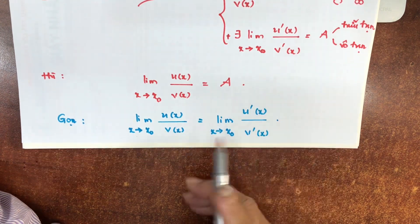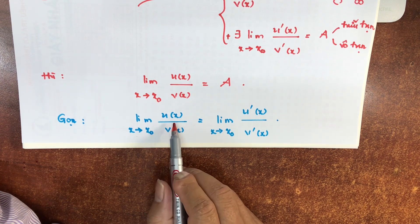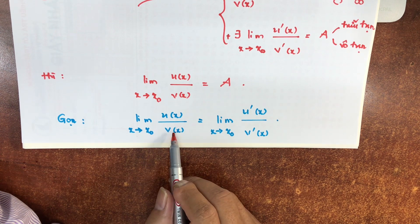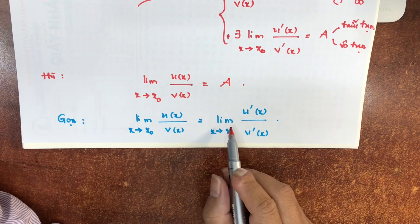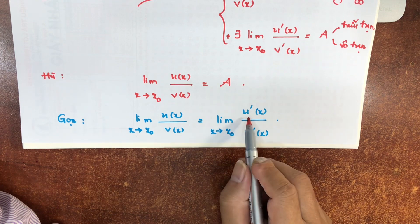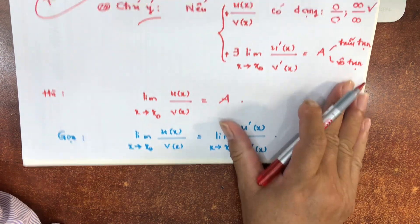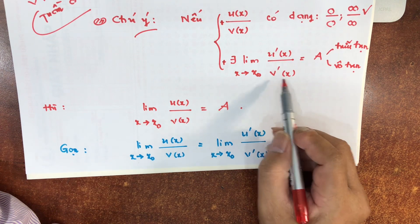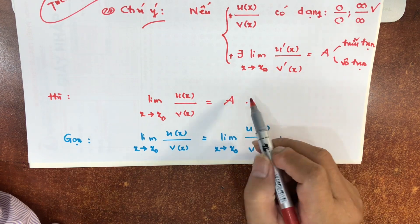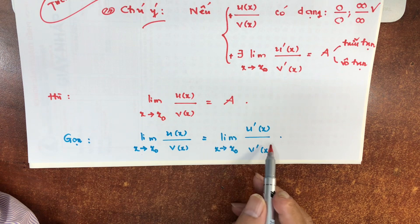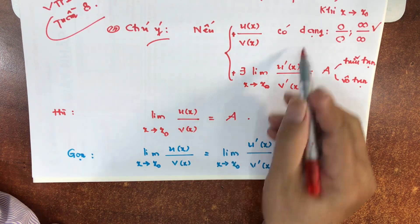Tóm lại, quy tắc Lobitan nói rằng: khi mình tính giới hạn tỷ số của 2 biểu thức, hay nói cách khác là tính giới hạn của một phân thức mà giới hạn này có dạng 0/0 hoặc vô cùng chia vô cùng, thì lúc đó chúng ta tìm giới hạn của đạo hàm tử số chia đạo hàm mẫu số. Về mặt bản chất toán học phải theo cái trình tự như thế này.